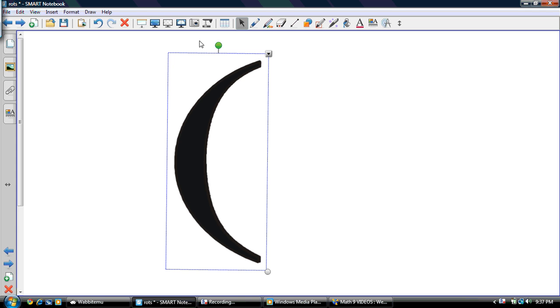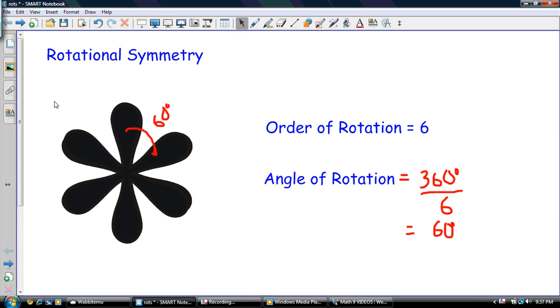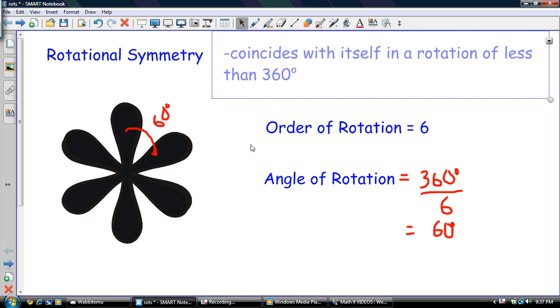So keep that in mind. That's a common mistake that sometimes people make. But yeah, rotational symmetry—coincides with itself in a rotation of less than 360 degrees. Alright, thanks guys. Hope this helps.